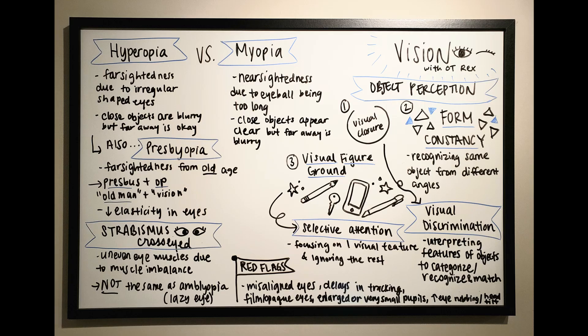Here's the distinction I want to highlight: hyperopia versus presbyopia. Presbyopia is when you are farsighted, but it's from old age, which is different from hyperopia. If we break down the Greek terminology, presbyopia comes from 'presbys' plus 'op' — presbys means old man and op means vision, so it's essentially old man vision. It means you have decreased elasticity in the eyes as well as decreased accommodation.